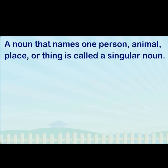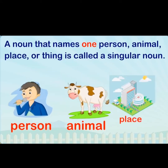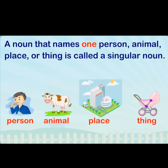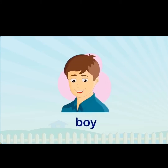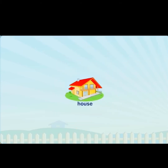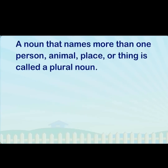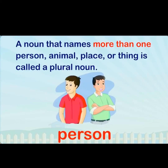A noun that names one person, animal, place or thing is called a singular noun. For example: a boy, a cat, a house, a flower.